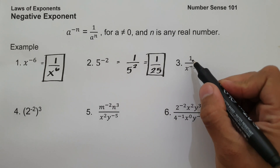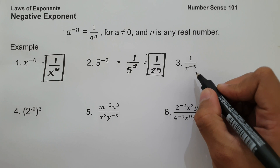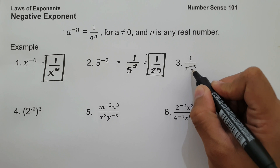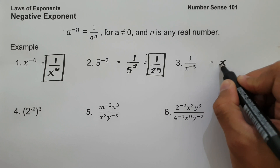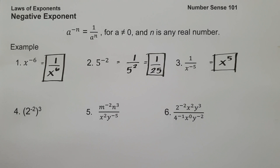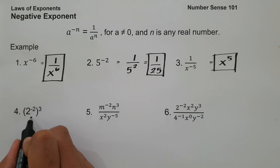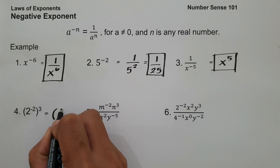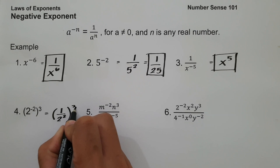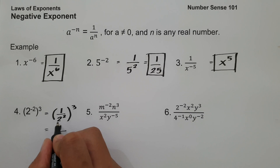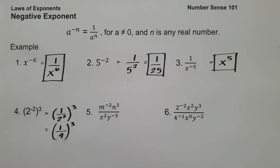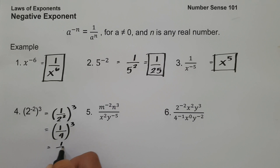On example three, we have 1 over x raised to negative 5. Since the exponent of x is negative and on the denominator, we move it to the numerator to eliminate the negative sign, giving us x raised to 5. On example four, we have 2 raised to negative 2, raised to 3. First, simplify the expression inside: 1 over 2 squared is 1 over 4, then raised to 3. Distributing the exponent gives 1 raised to 3, which is 1, over 4 raised to 3, which is 64. So the answer is 1 over 64.